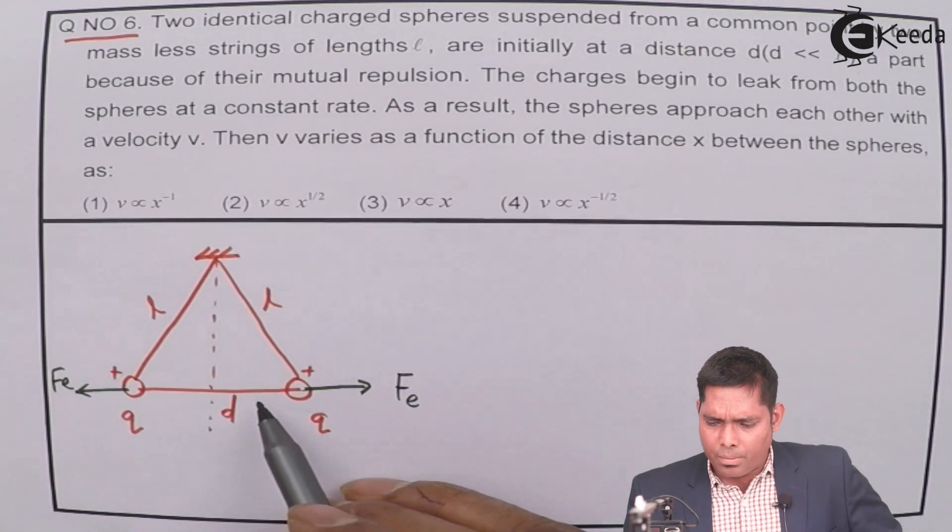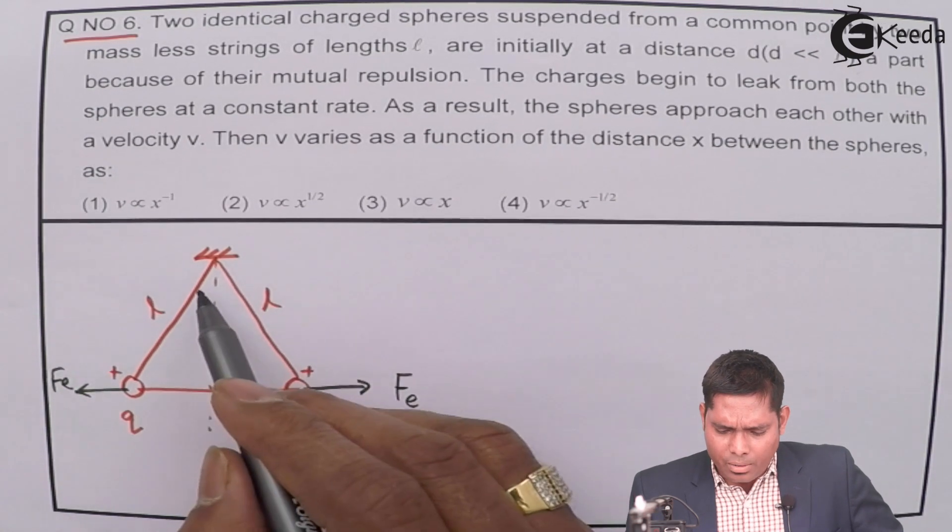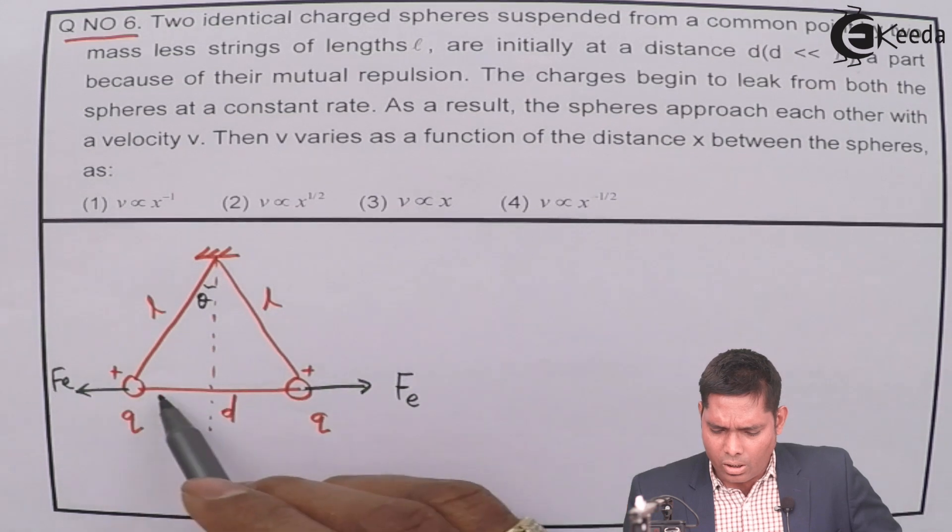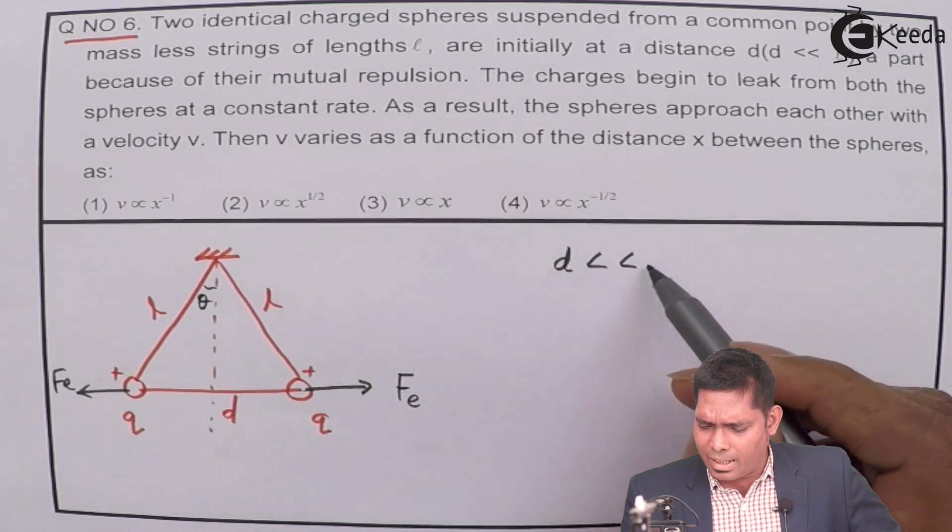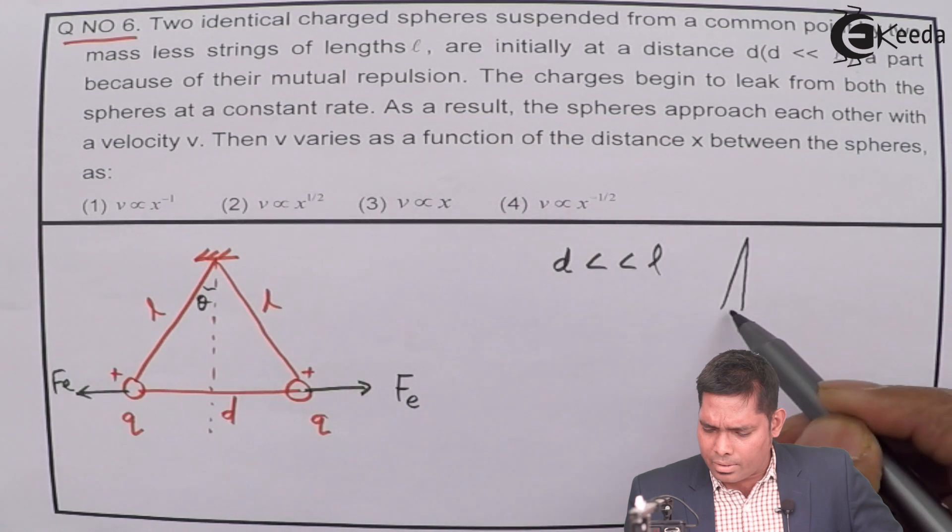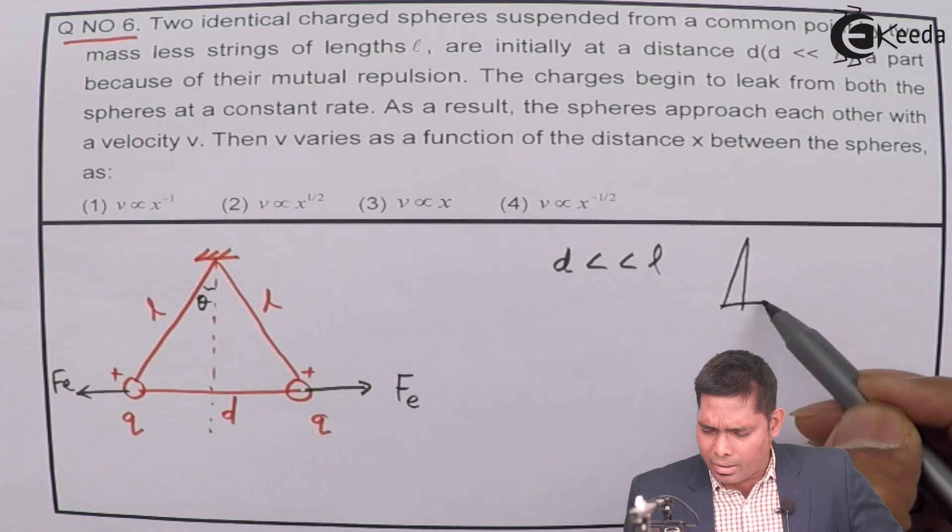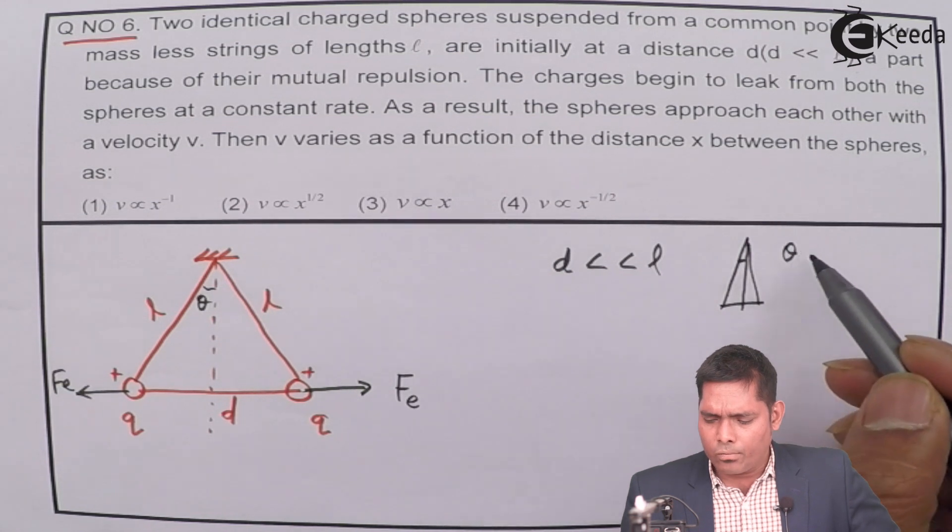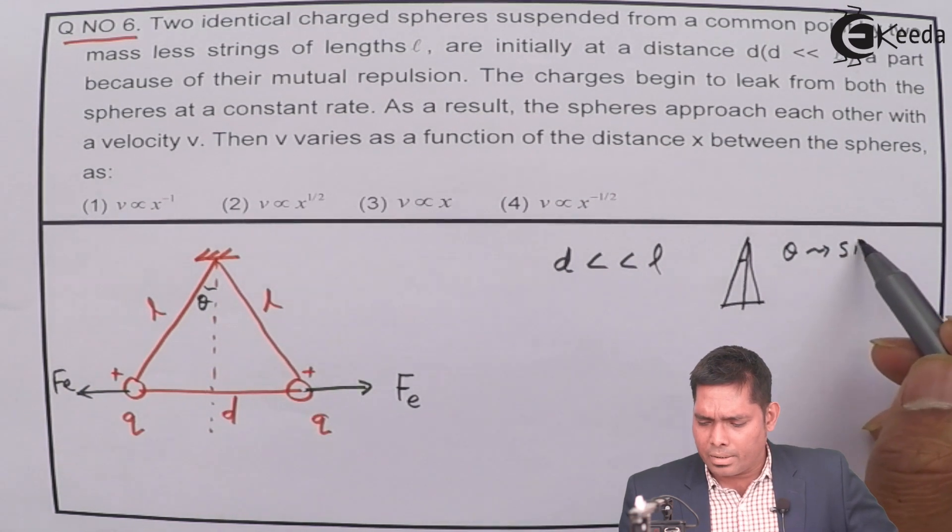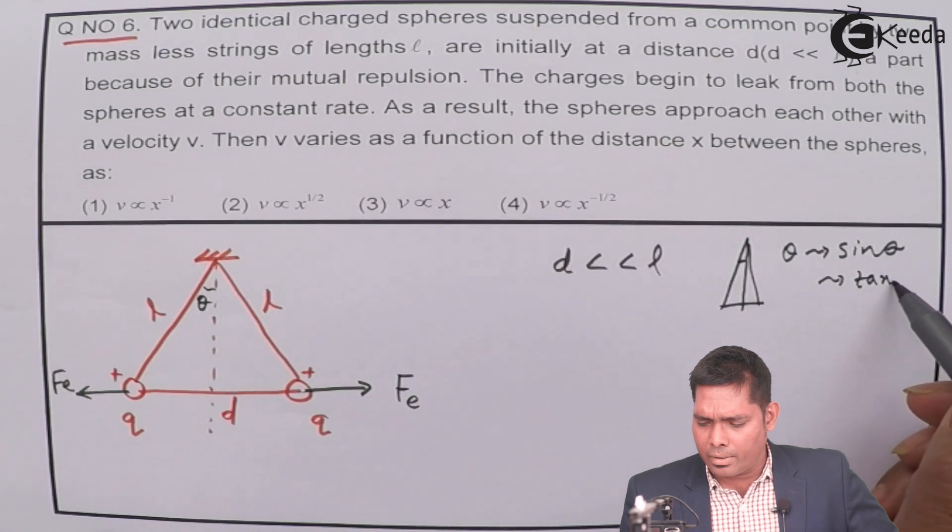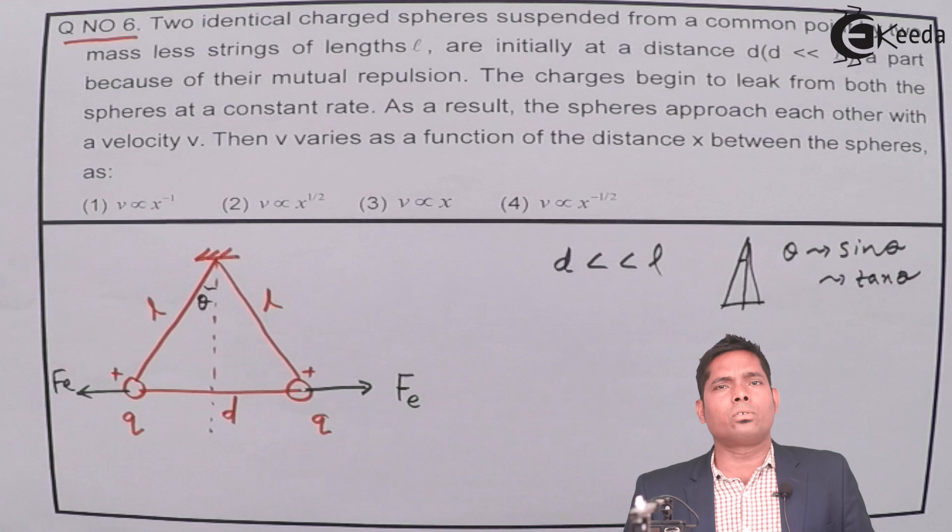This force I call force due to electrostatics. So it is Fe here and Fe there. These two are of same magnitudes. Now, it says that this D is much less than L. That means this theta is very, very small. This angle is very, very small. So theta can be replaced by sine theta and that can also be replaced by tan theta as when required.